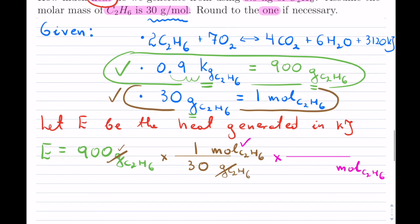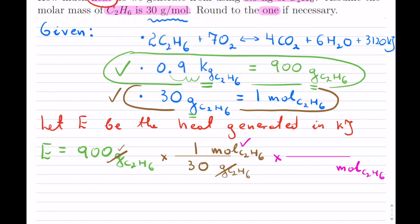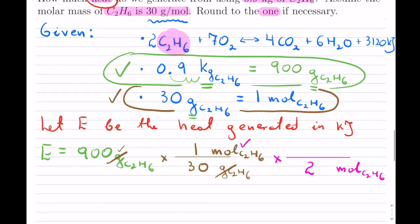And I'm going to put the moles of C2H6 at the bottom. But the only thing that I can use now is my reaction. So I'm going to find C2H6, which is right here. Remember, the number in front just tells you how many moles you have.